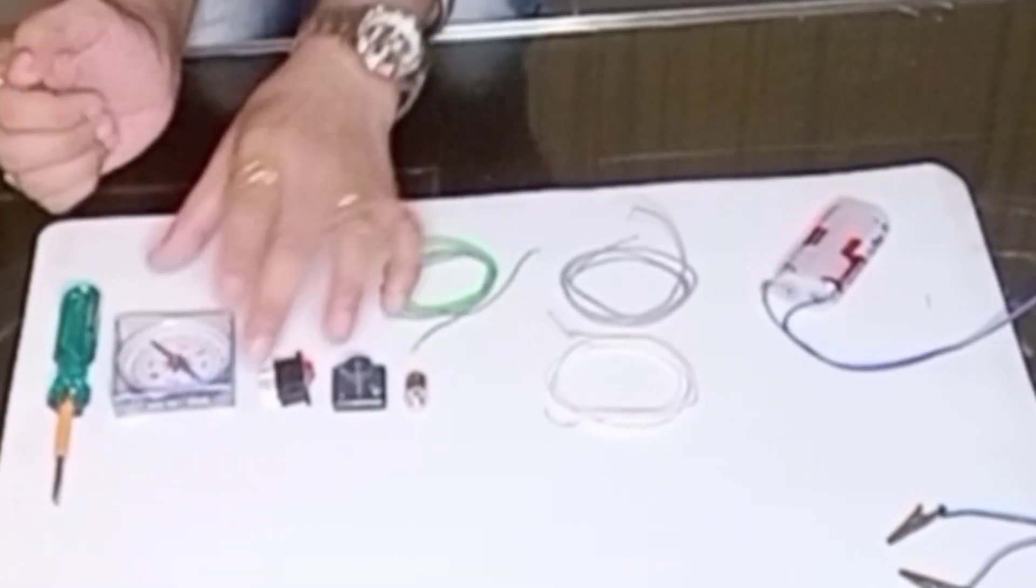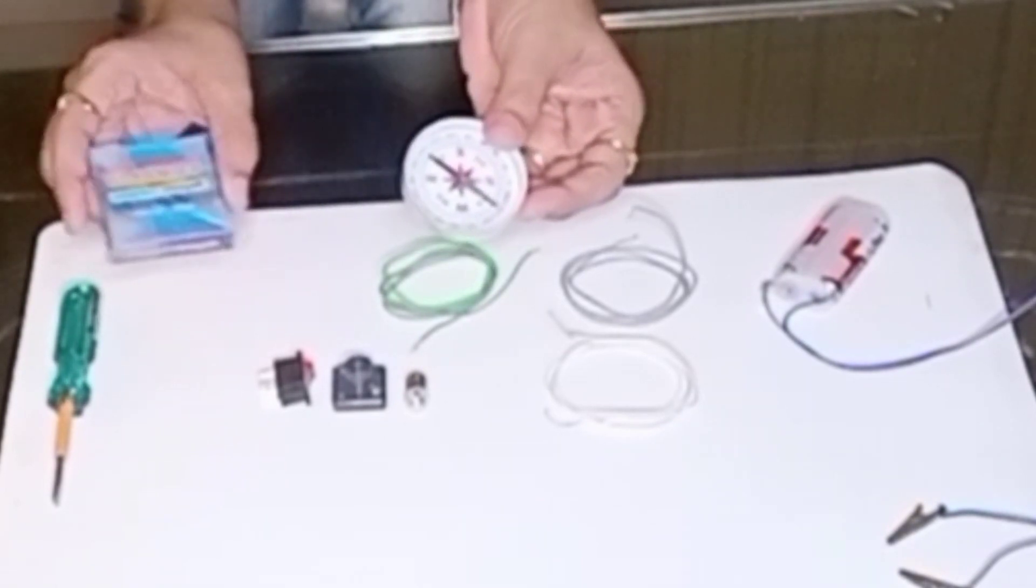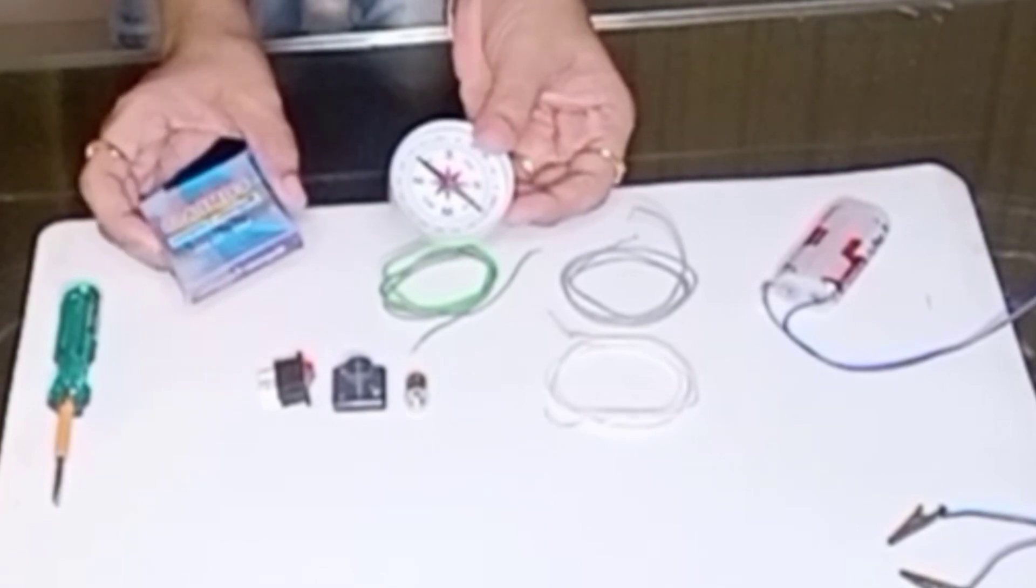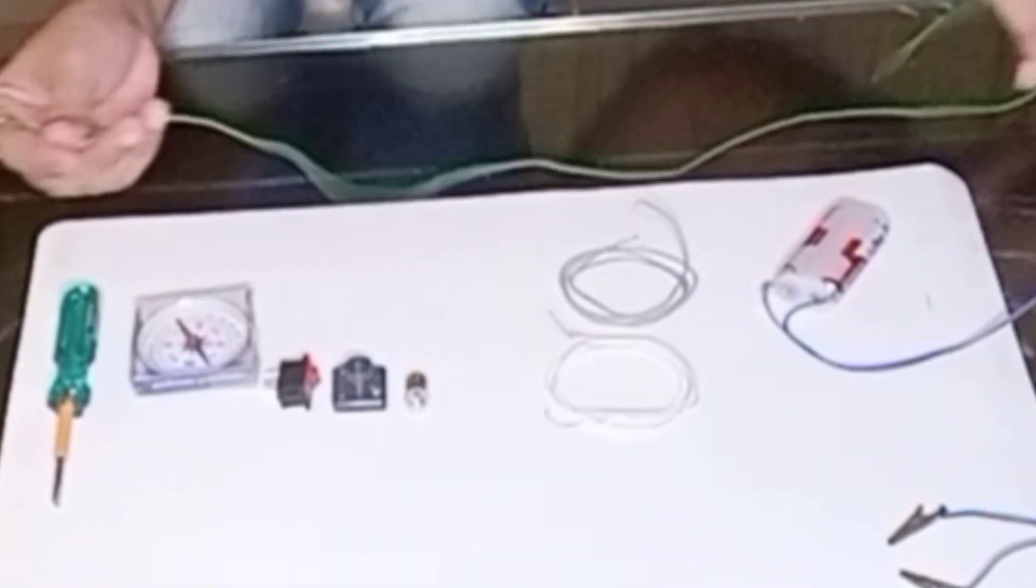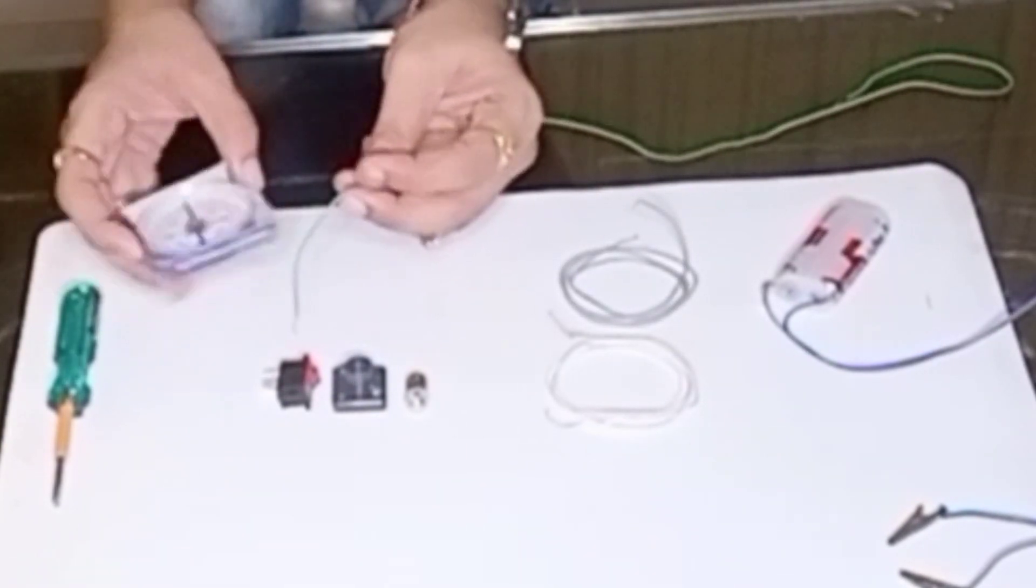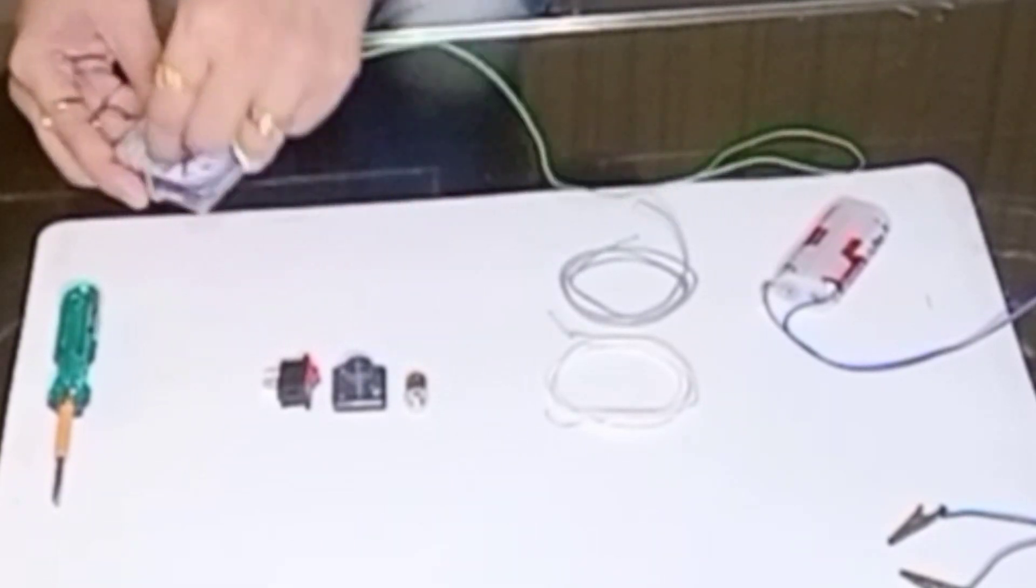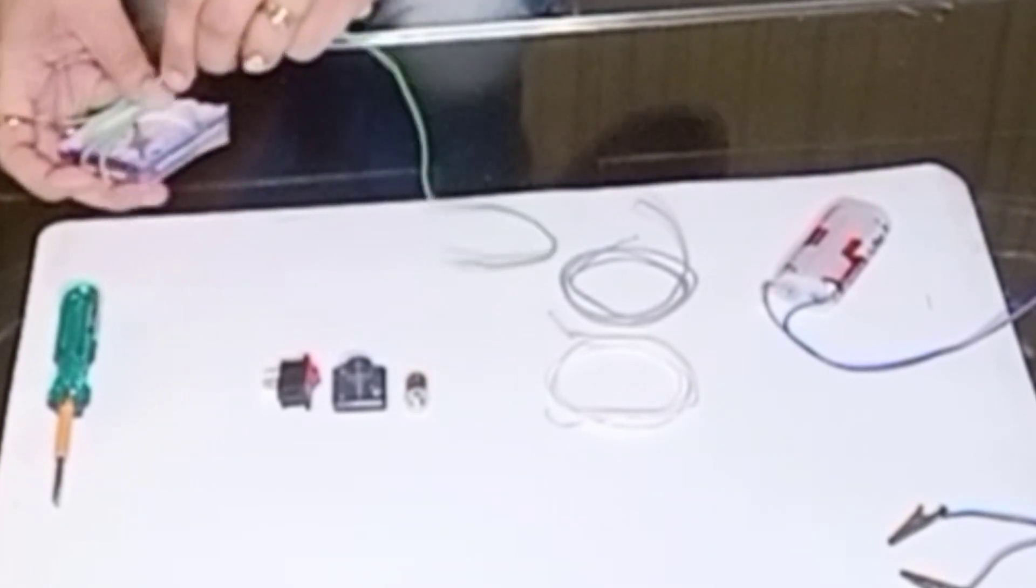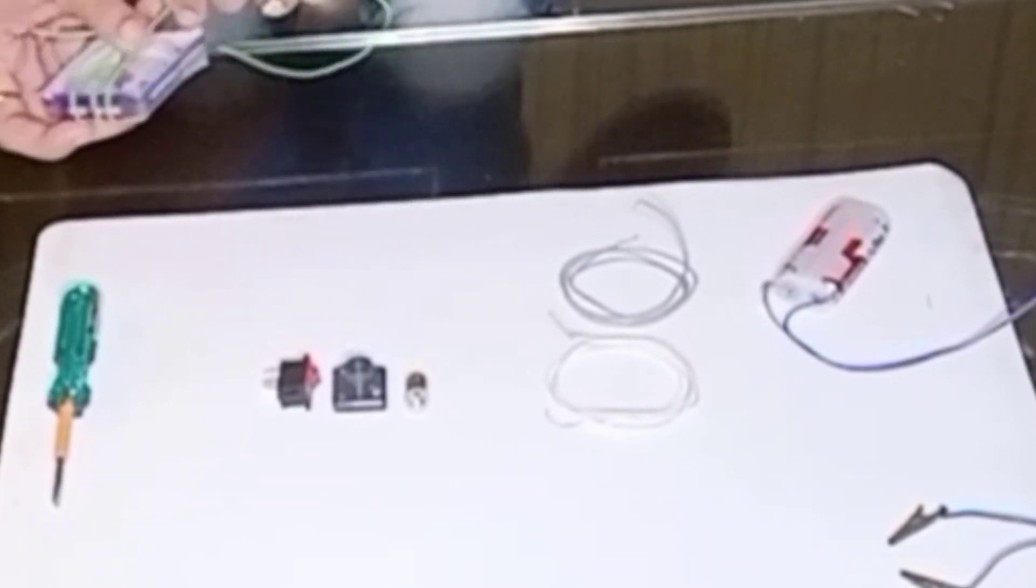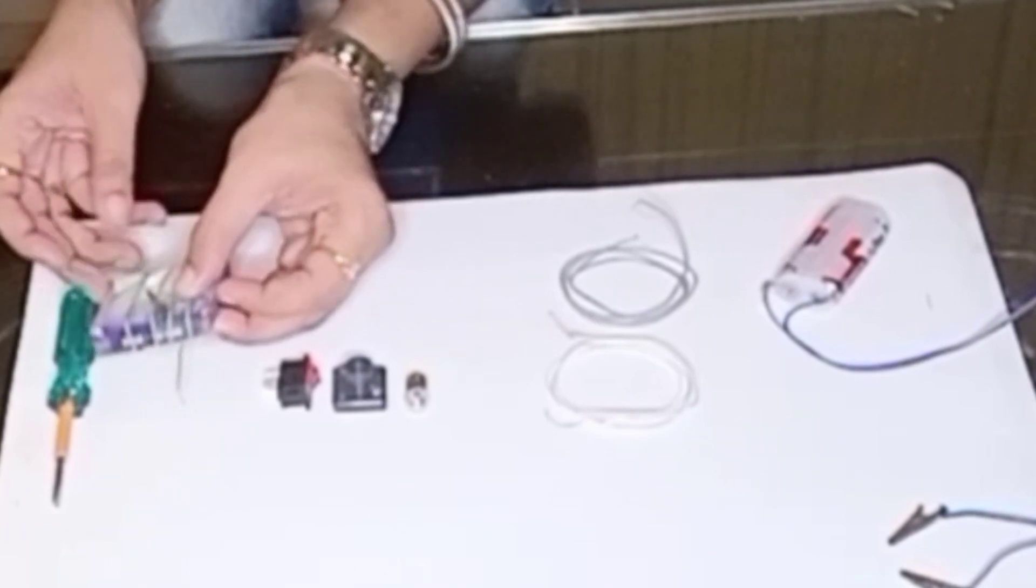My first step is, we'll take this magnetic compass and this empty box. You can take any box for that matter. We'll just keep the compass inside that and then I'll take a wire and start to wind it.